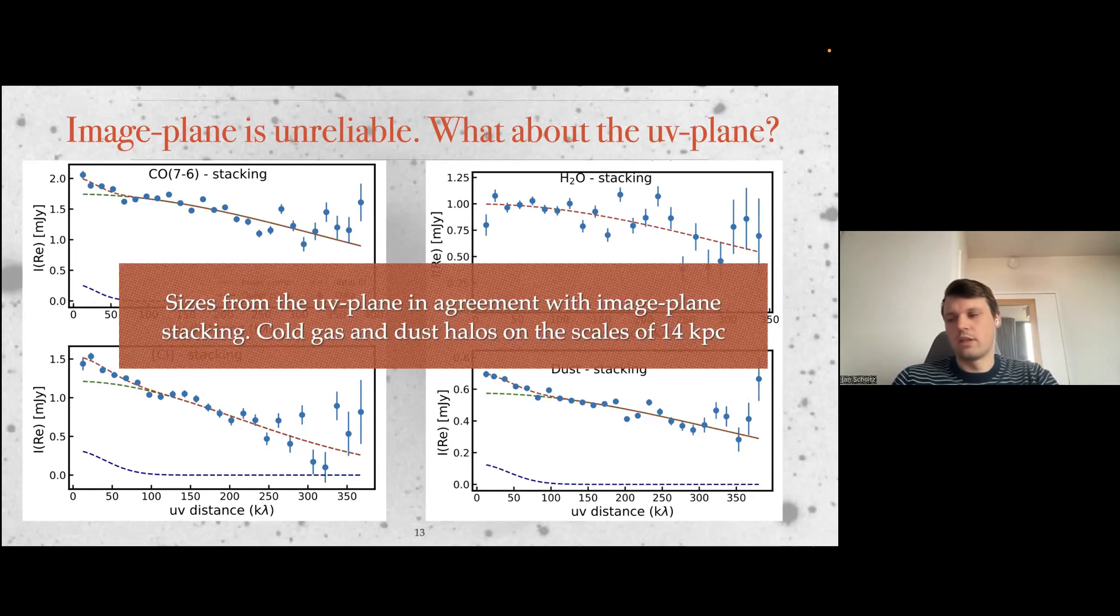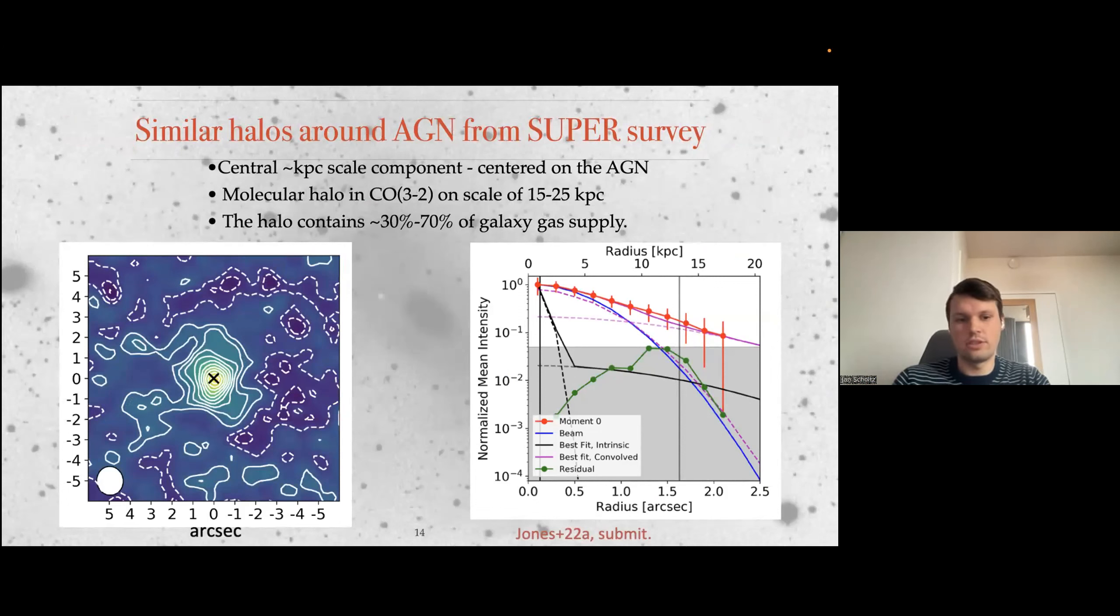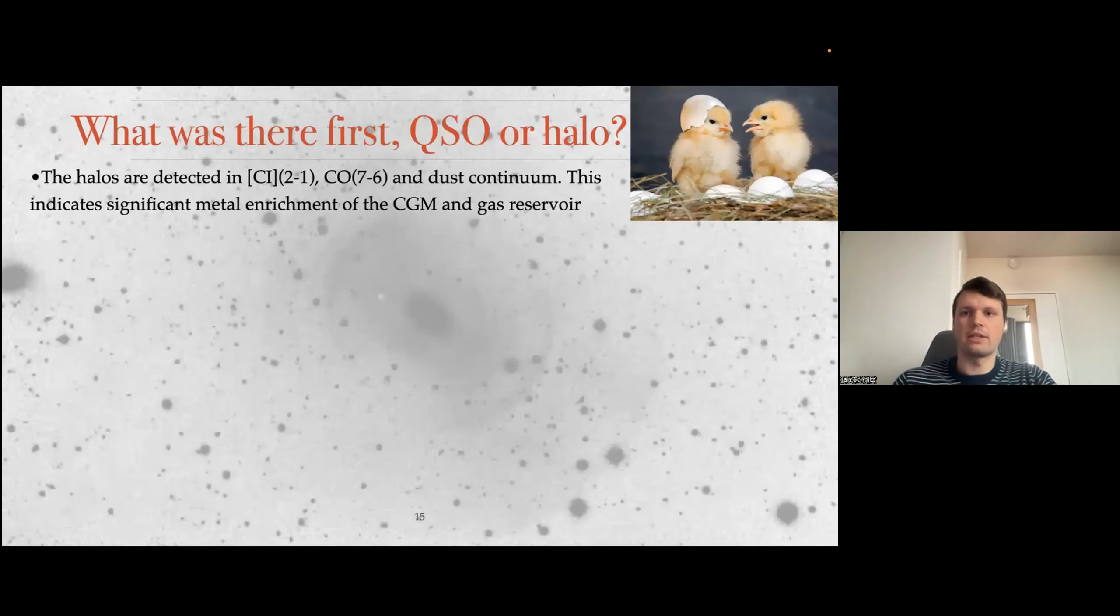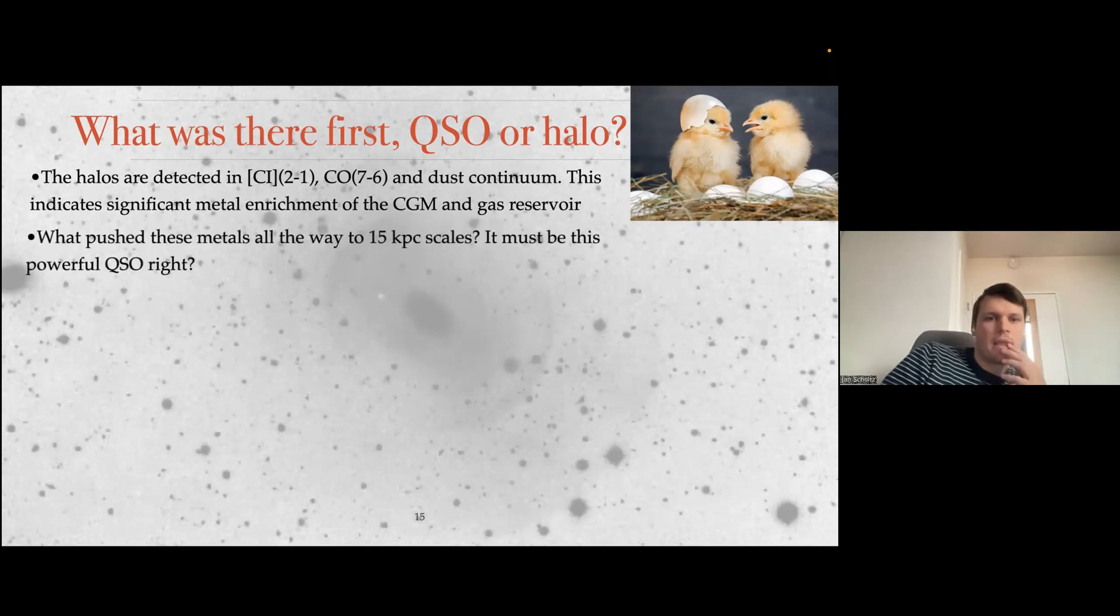So there are 14 kiloparsec large halos, which means that for galaxies at redshift 2 that are roughly the size of 8 kiloparsec from HST, this is twice as big as the galaxy. We also see this around AGNs, so this is Gareth Jones' work, and you can see that he actually sees around normal AGNs at redshift 2 the CO halos on roughly 15 to 25 kiloparsec scales. So chicken or egg, what was there first? Was there first a quasar or the cold gas halo? And the reason is that we showed that there is C1, there is CO, and that there is dust, which means that there is a significant metal enrichment of the CGM in these large scale gas reservoirs.